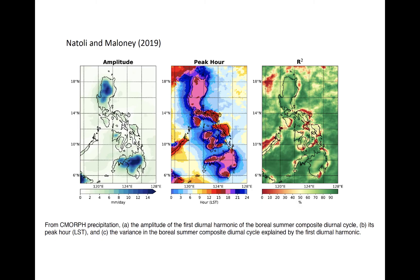Different diurnal variability is seen over land, and the diurnal variability over land can furthermore impact that seen over nearby oceans. Shown here are observed diurnal cycles of rainfall during boreal summer over the Philippines. The amplitude of the diurnal variability is much larger over land than over ocean, as seen in the leftmost plot. This occurs because terrain-induced precipitation is strongly forced by diurnal variability. The time of day of maximum precipitation is a function of space, as shown in the middle panel: rainfall peaks over land in the late afternoon, around 3 to 6 pm local time. Convection then begins to move offshore, occurring at later hours overnight over adjacent seas, as mesoscale convective systems often form near land during late afternoon and propagate offshore over the South China Sea. Thus, the maximum rainfall over the sea is typically at nighttime.